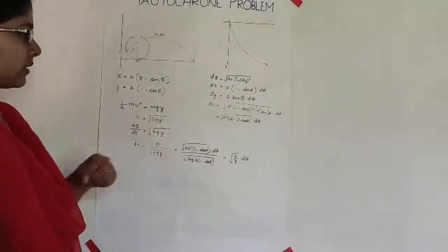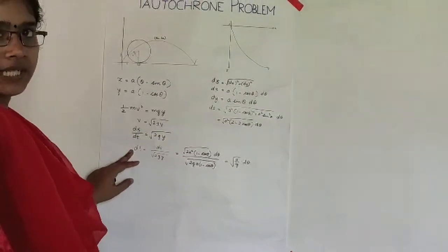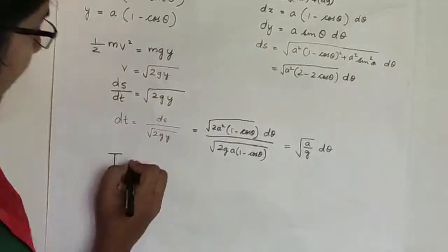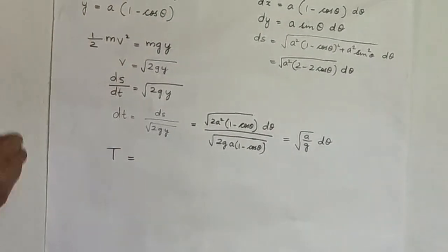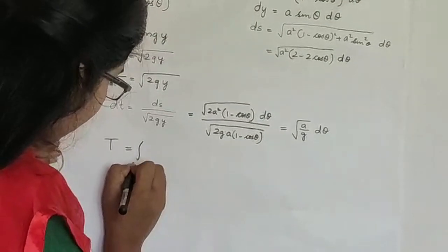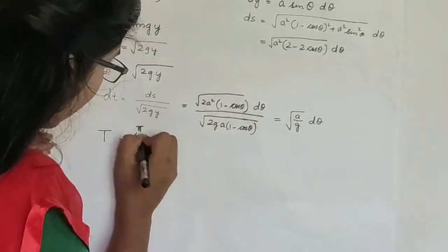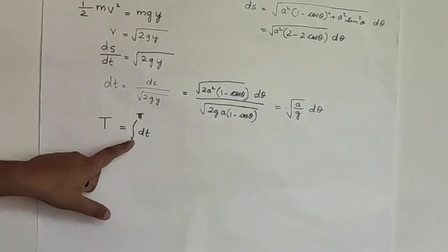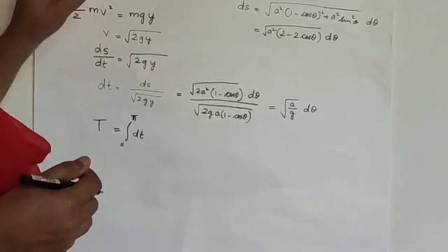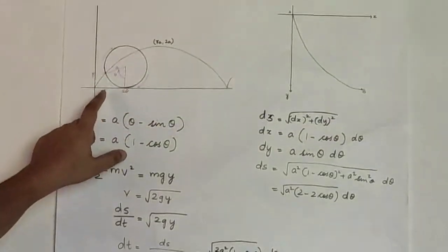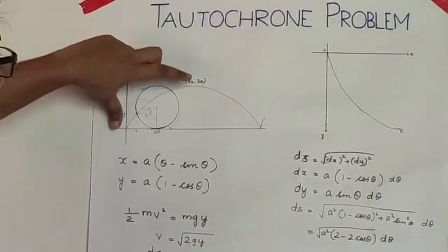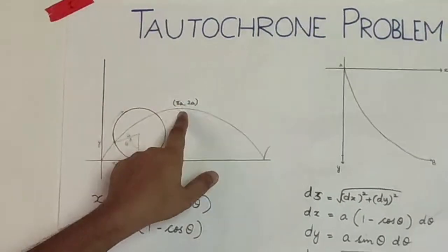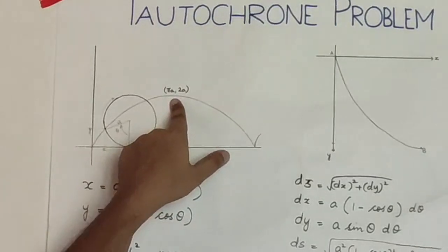This is what dt is. Now the total time t is the integral of dt from 0 to π. The limits are from 0 to π because the coordinates of the starting point are x = 0, y = 0, and the endpoint has x = πa and y = 2a.